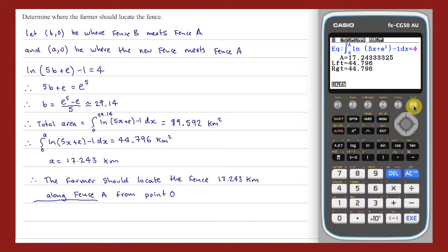There are other solution methods possible for this question. The point A can be found without finding the total area first. If we equate the area from 0 to A with the area from A to 29.19, we generate a different equation that can be solved for A. This equation, though slightly more complex, can also be solved using solver.